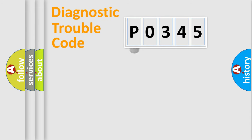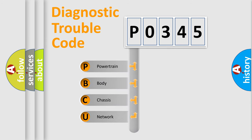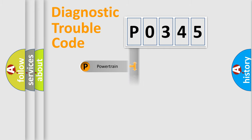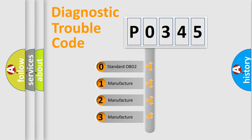First, let's look at the history of diagnostic fault code composition according to the OBD2 protocol. We divide the electric system of an automobile into four basic units: powertrain, body, chassis, and network. This distribution is defined in the first character of the code. If the second character is expressed as zero, it is a standardized error.